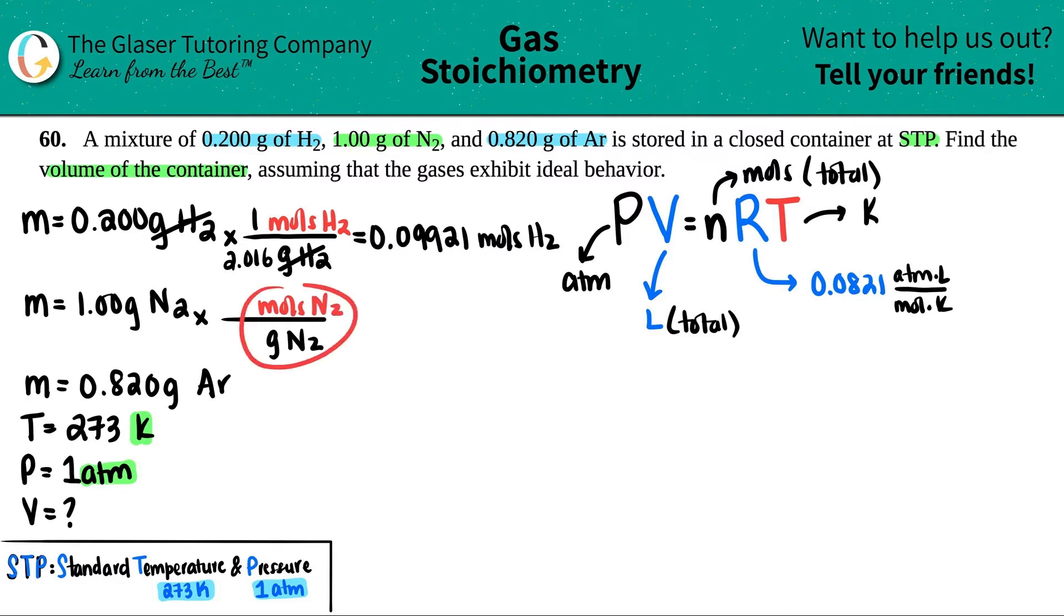Using the periodic table, one mole equals whatever the mass of N2 is, and that's 28.02. Cancel out the grams of N2, and now 1 divided by 28.02 is - I'm just going to extend it a couple more digits - 0.03569, and that's moles of N2.